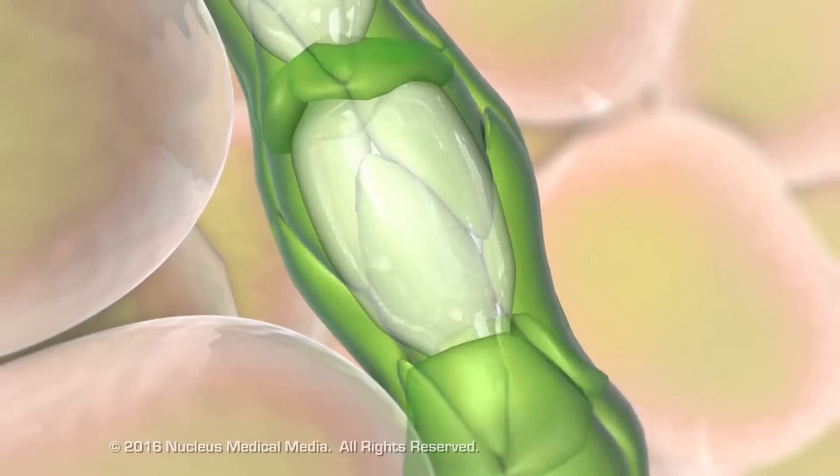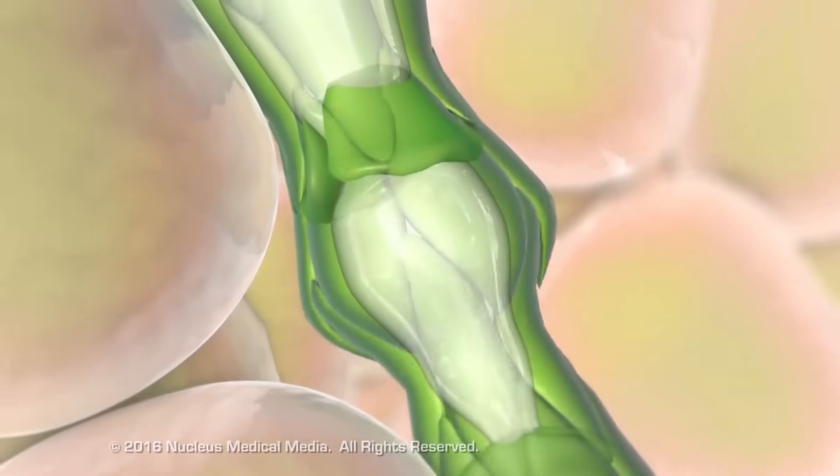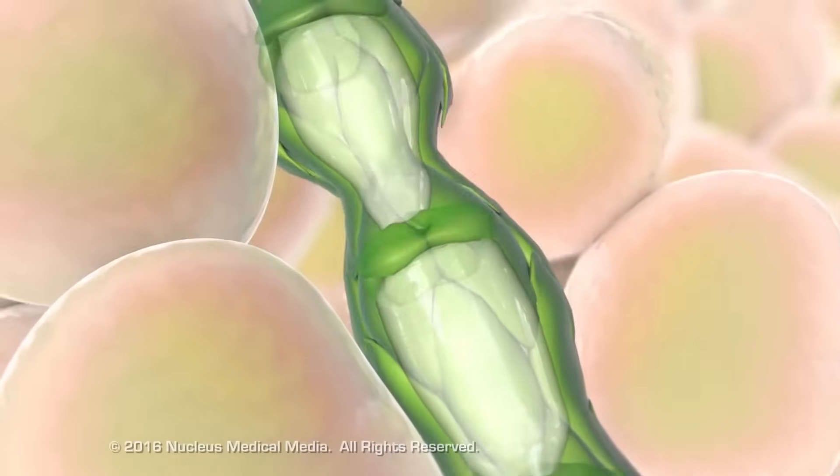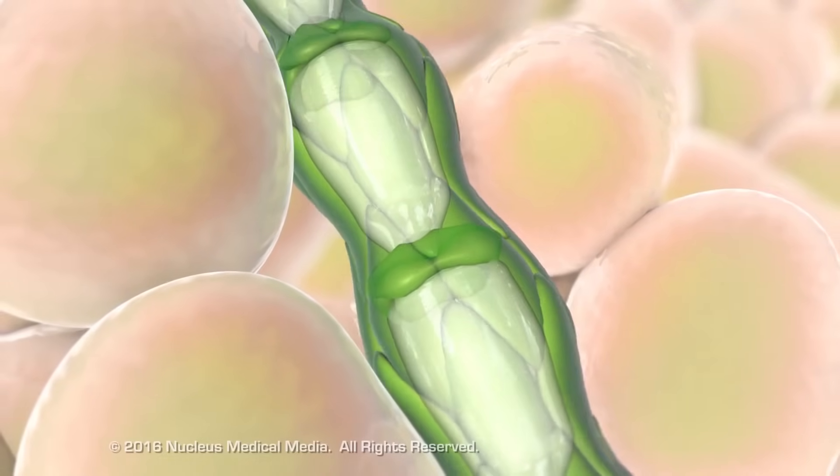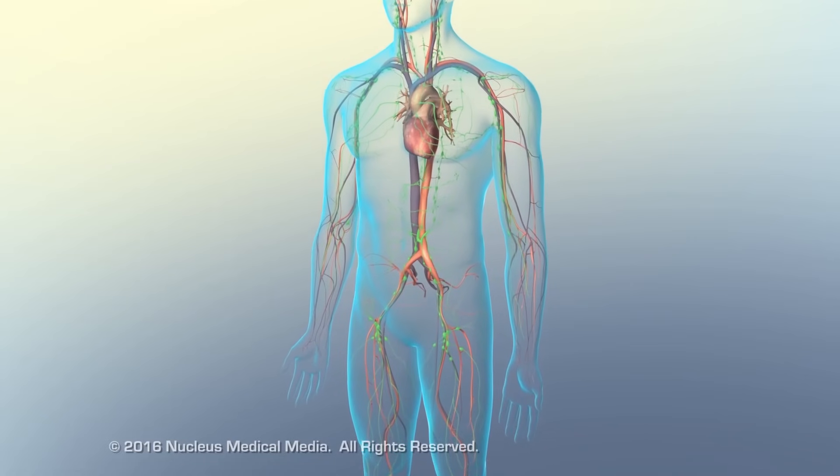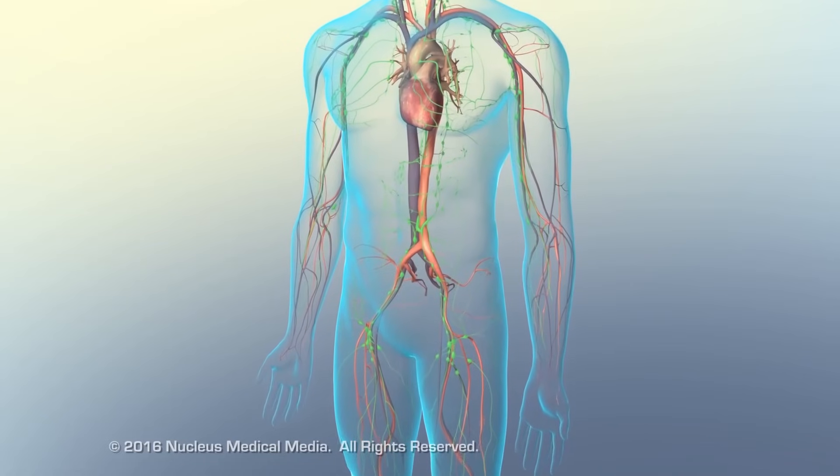The vessel wall contractions push the lymph to the next valve, which opens and allows lymph to move forward while preventing backflow. The collecting vessels combine into lymphatic trunks.